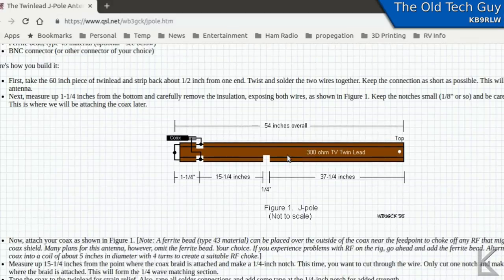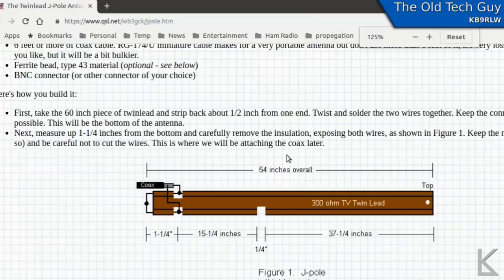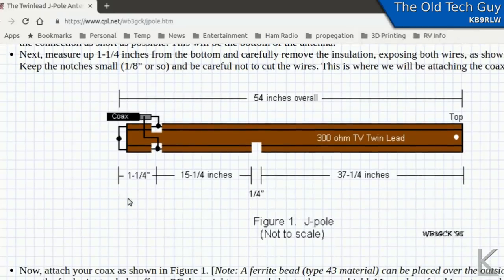He lays out the instructions here and he's got measurements right here. If you stick to these measurements, it's probably going to be good right off the bat on two meters. You cut a 54 inch length of the twin lead. He puts a little hole here in the end and that's for hanging it. You measure back 37 and a quarter inches and you cut a one quarter inch gap in one side. That's creating the J. This side is the J here on the bottom. You join the wires on this end together and then this side makes the actual radiator. Now down here, one and a quarter inches from the end, you'll bare the wires on both sides. And this is where you'll attach your coax.